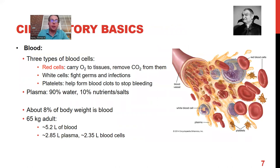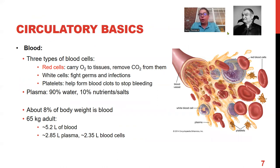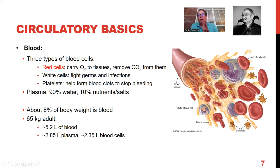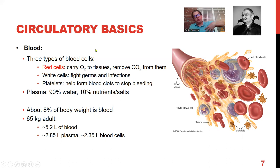That's our respiratory system. Now let's do circulatory. First we talk about blood — blood is an organ. It's comprised of a lot of liquid, which makes it weird to think of as an organ. Think of cells suspended in the plasma, where plasma is the liquid. The main cells we're interested in are the red blood cells, which contain hemoglobin that binds to oxygen molecules.